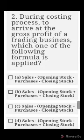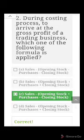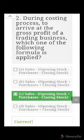The right answer is: Sales minus (opening stock plus purchases minus closing stock). Opening stock plus purchases minus closing stock is the formula for cost of sales, so by subtracting it from sales we get the gross profit.